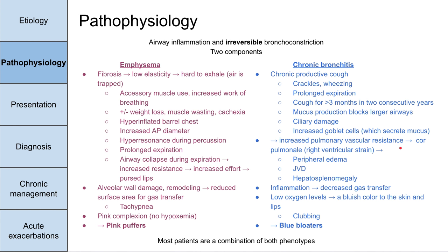If pulmonary vascular resistance is high, the right heart suffers — this is called cor pulmonale: right ventricular strain. The right ventricle, which leads into the pulmonary vasculature, is straining, so you can end up with a large right heart, right atrial enlargement, or right ventricular hypertrophy. Because of that, you might also have symptoms of right heart failure like peripheral edema, increased JVD, and hepatosplenomegaly — essentially the blood's circulatory system backing up behind the lungs.